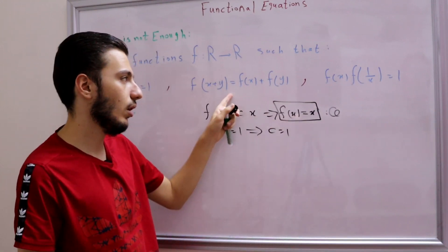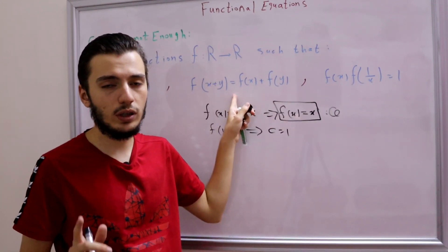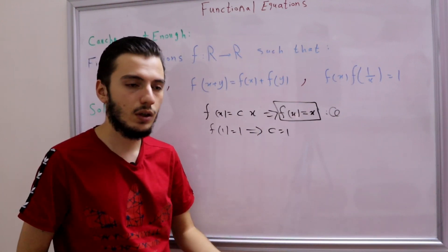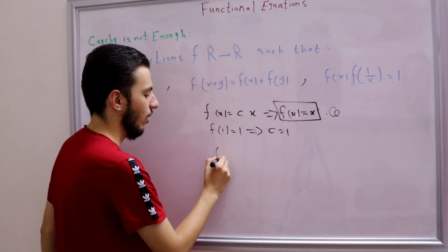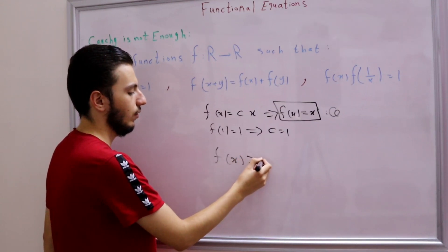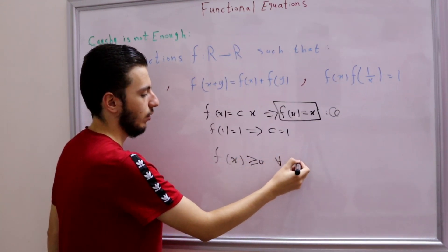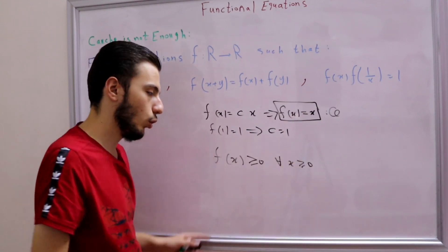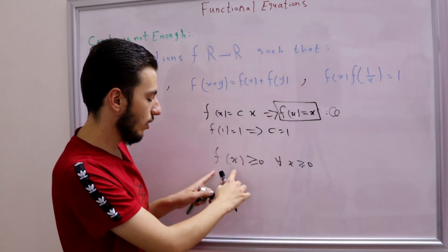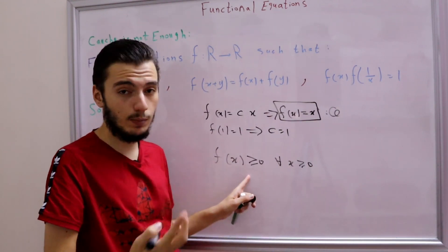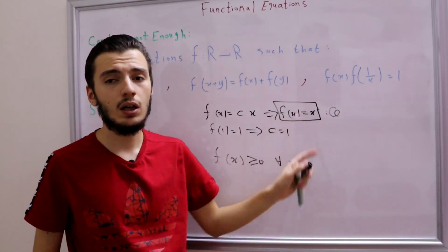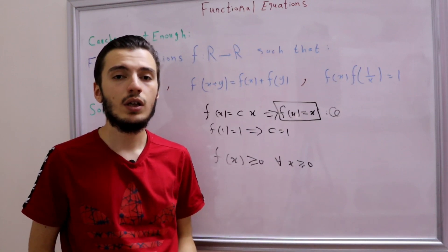To show f is increasing, we just need to show that f maps positive numbers to positive values — f(x) > 0 for all positive real x. If we can show that, then f is increasing, which lets us generalize from ℚ to ℝ, giving f(x) = x.